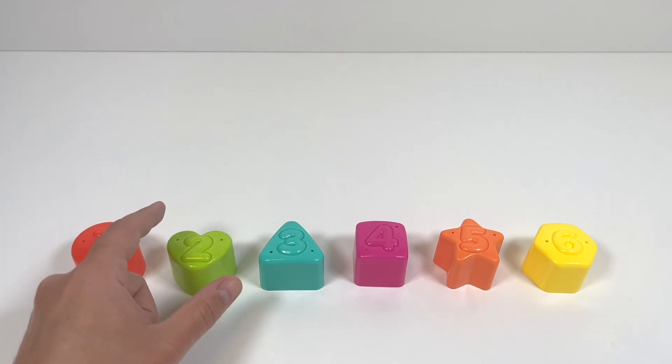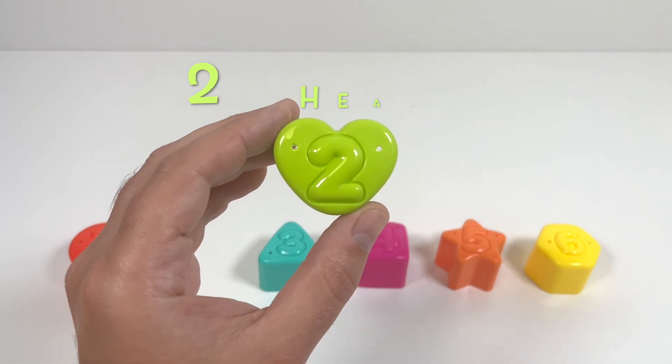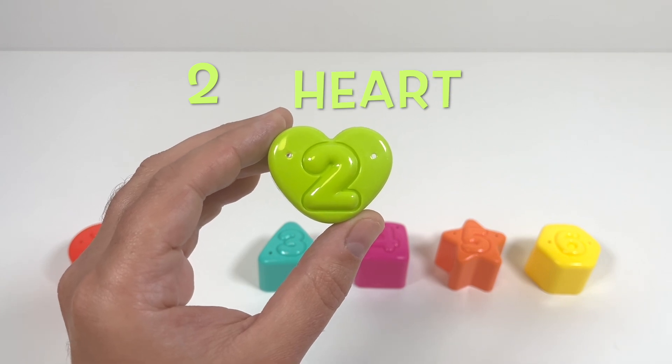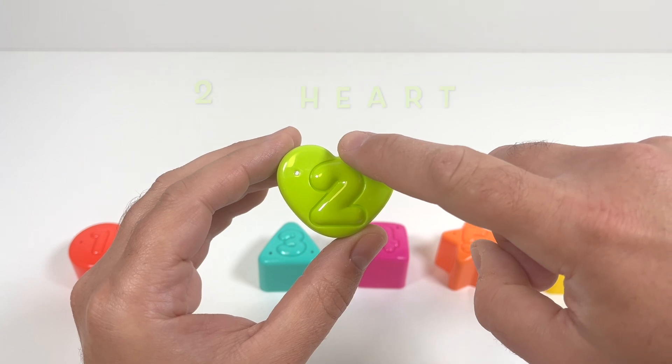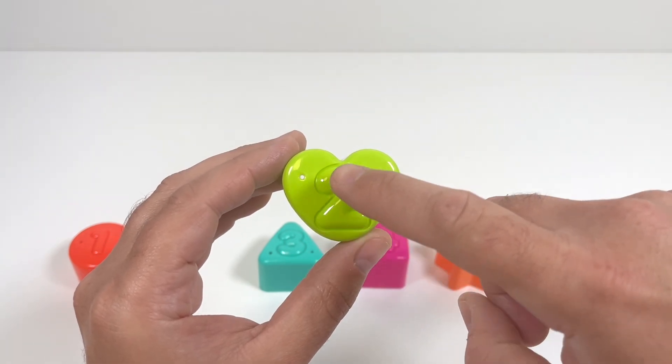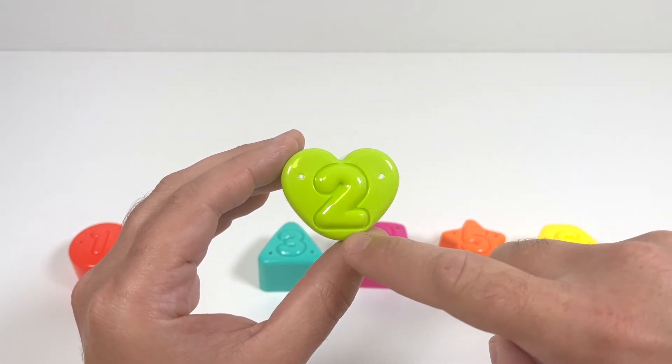Number 2 is in the shape of a heart. A green heart. A heart has two curved sides that meet in the middle. Yeah, this is a green heart.